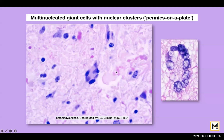Another interesting feature is the presence of multinucleated giant cells where the nuclei are arranged in the form of a horseshoe, and that is classically described as a pennies on a plate appearance. As you can see here, it is as if some pennies are kept side by side in a horseshoe pattern on a plate.